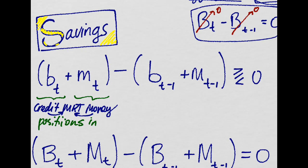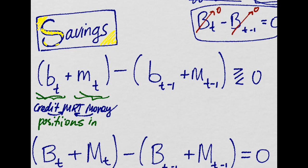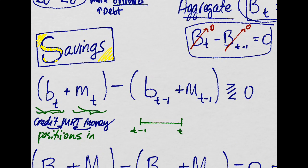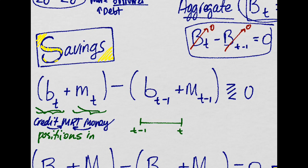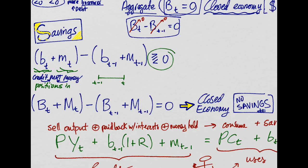So if an individual can use two financial instruments, bonds and money, the change in one period in his position in the credit and the money market will be his savings. Individual savings for one period can be positive, negative, or even equal to zero. But in aggregate terms, there are no savings if we have a closed economy. That is, the stock of bonds is zero, and the money stock does not change. So no savings in aggregate terms.